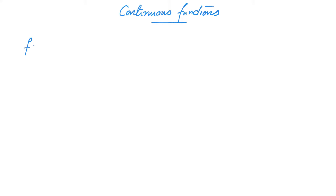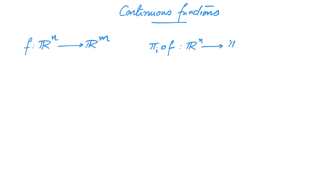Let us summarize what we have learnt so far. We were interested in the continuity of functions f from Rⁿ to Rᵐ. However, we soon saw that f is continuous if and only if πᵢ composed with f is continuous for all i. πᵢ is the projection to the i-th coordinate, and thus πᵢ composed with f is a function from Rⁿ to R. Thus it is enough to study functions from Rⁿ to R.